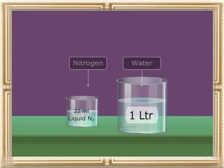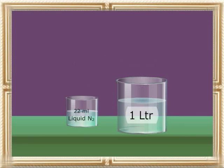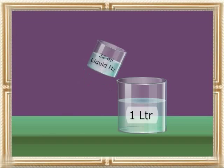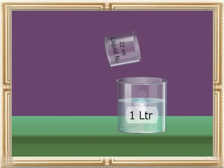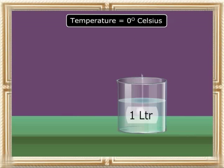Let me tell you about another interesting property of nitrogen gas. Nitrogen is slightly soluble in water. 1 litre of water dissolves about 22 ml of nitrogen at 0 degrees Celsius.